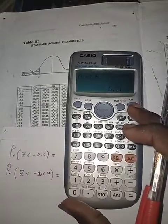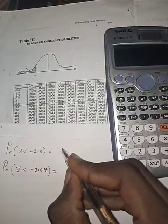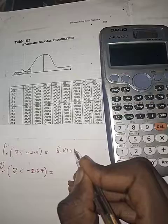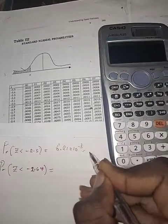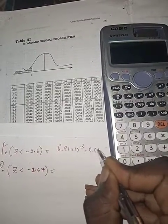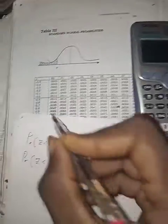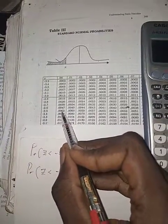6.21 times 10 to the power of minus 3, which equals 0.00621, the same as what we have here.